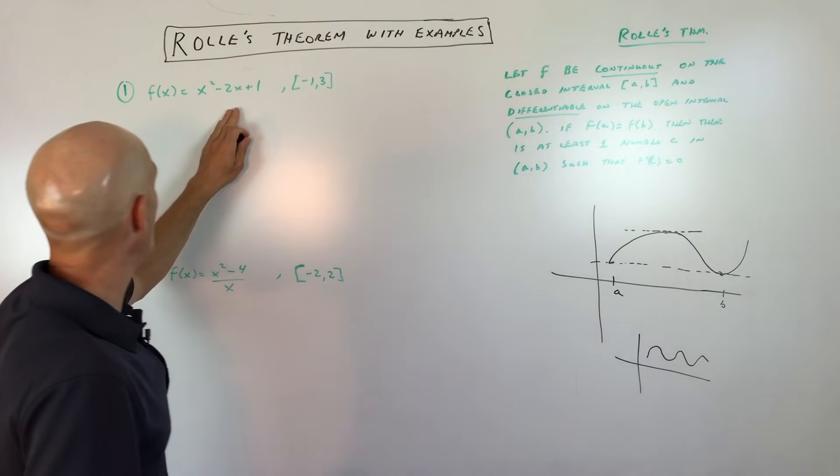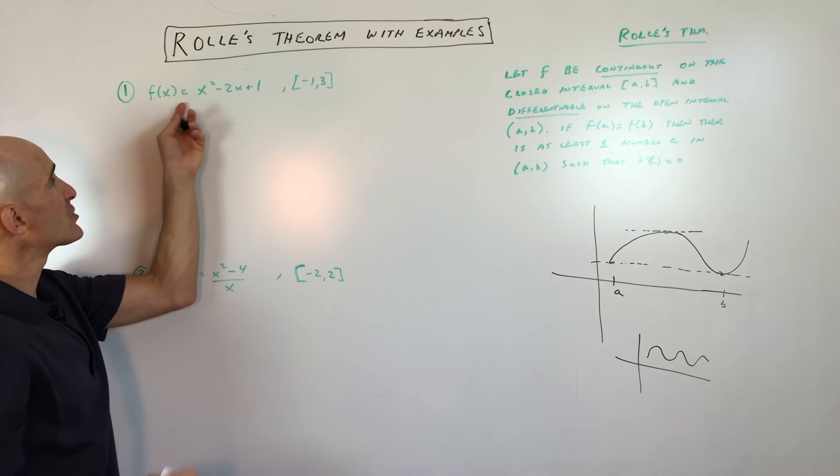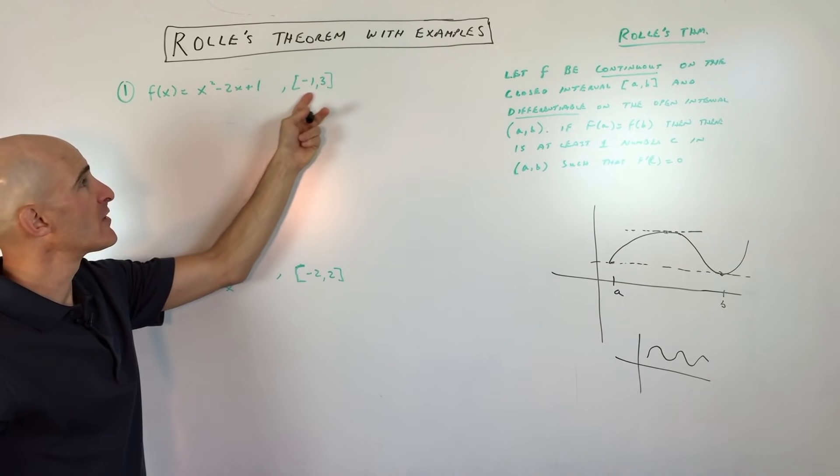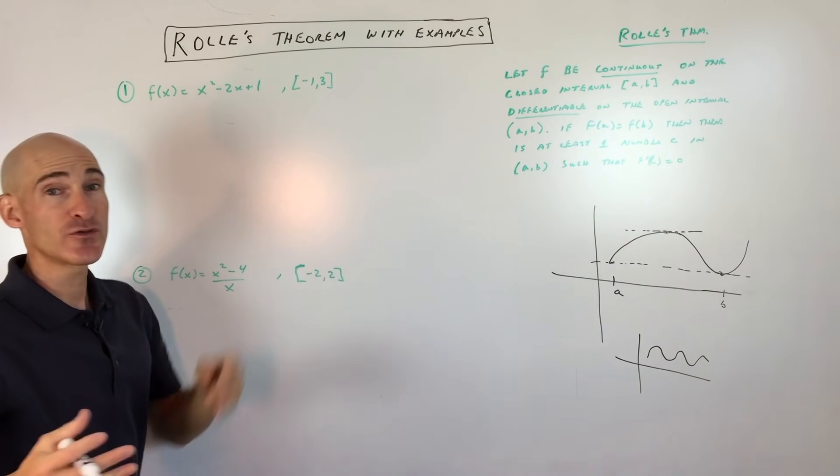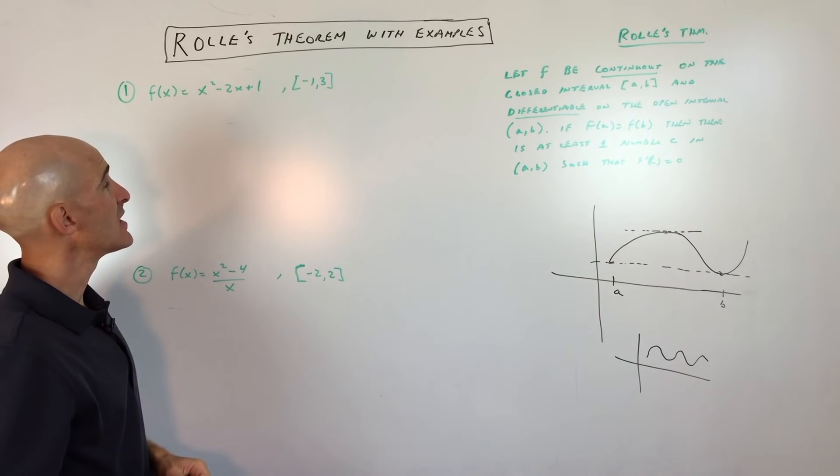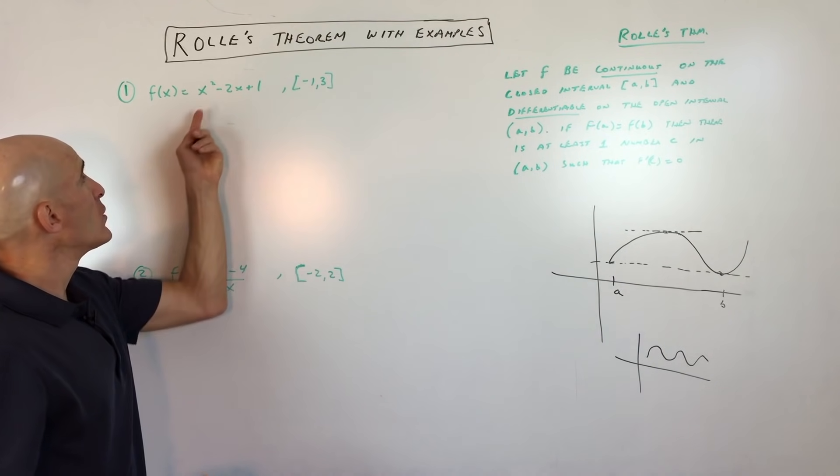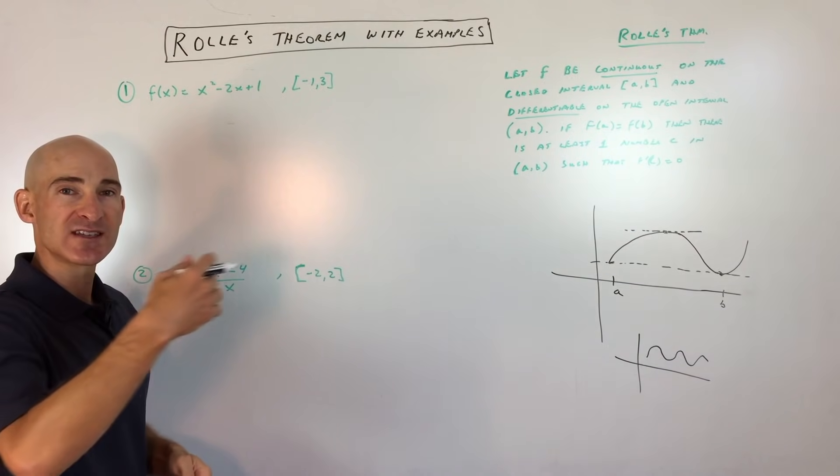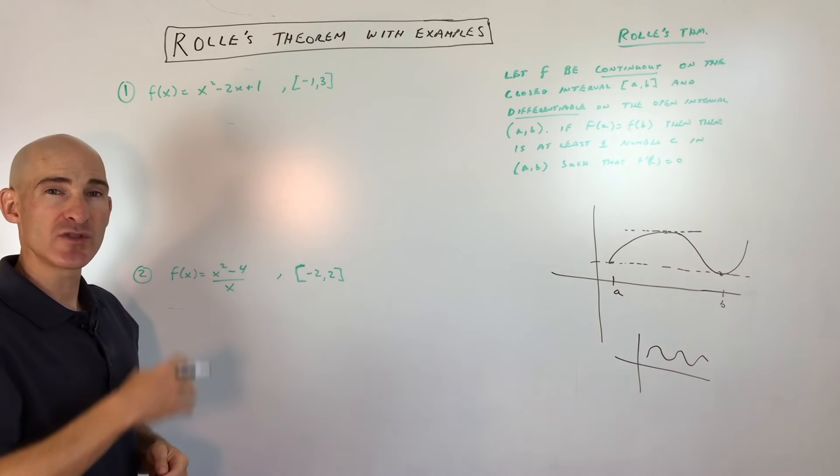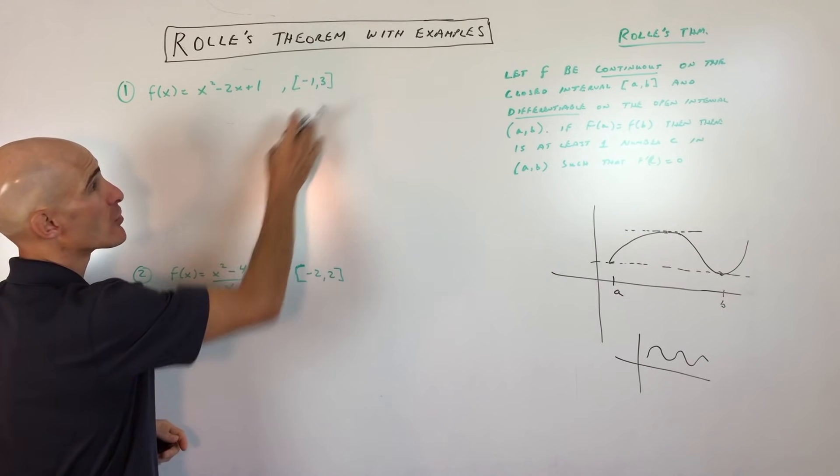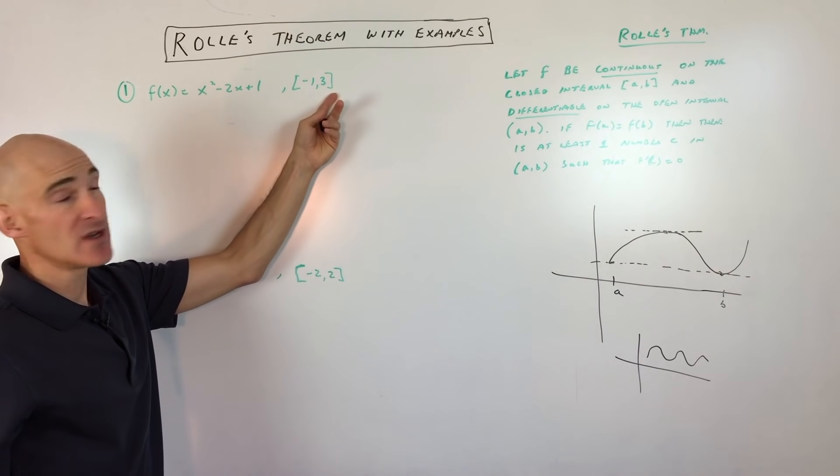So let's look at some examples. Example number one, we've got a function here, f of x equals x squared minus 2x plus 1. And the interval that they're giving us is negative 1 to 3. So first thing we want to test is to see if Rolle's theorem applies. And we know that this is a polynomial, so we know that it's continuous. There's no breaks in it. And we know that it's smooth, meaning that we can take the derivative anywhere along this curve, even in between negative 1 and 3.